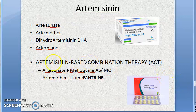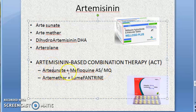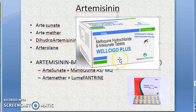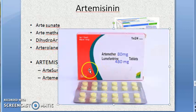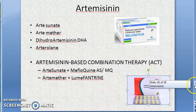Now for ACT (Artemisinin-based Combination Therapy), the key regimens are: artesunate plus mefloquine (also called AS/MQ), and artemether plus lumefantrine. Artesunate plus mefloquine comes as tablets; artemether plus lumefantrine is another key combination.